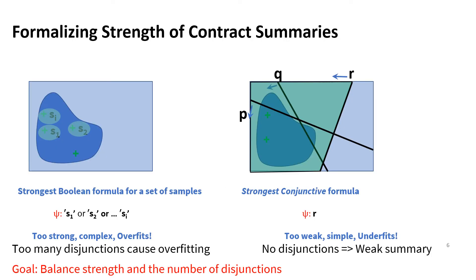Formalizing strength is not trivial because there is a tension between the strength of a summary and overfitting. A very strong contract is one that essentially says the behavior has to be one of the observed behaviors — S1 or S2 or Si — as you can see on the left-hand side. This grossly overfits the samples and does not generalize, and it will take a long time to converge, if ever. Notice that this contract also requires a large number of disjuncts. In general, the more disjuncts we have, the stronger contracts can be, but too many disjuncts can cause overfitting. We can move to the other extreme and disallow disjunctions altogether. However, this will result in a very weak contract. What we need is a balance between strength and the number of disjunctions used. We want strong contracts that also use a small number of disjunctions.